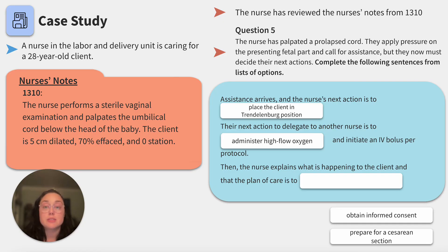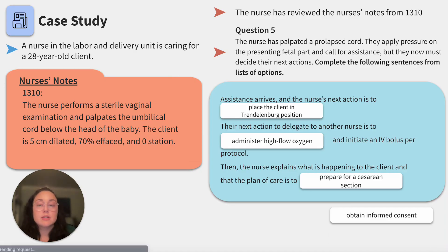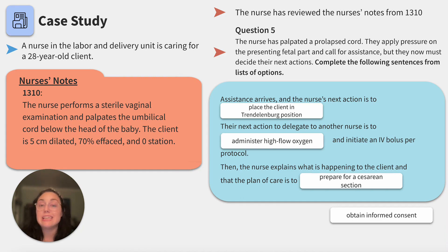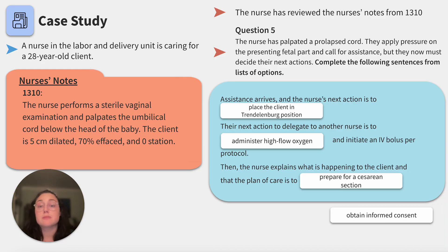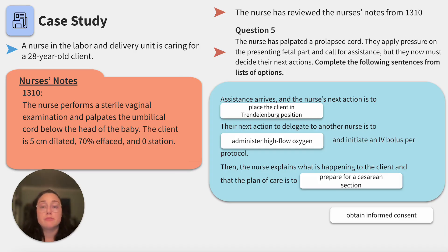Then the nurse explains what is happening to the client and that the plan of care is to prepare for a cesarean section. It is very important to inform our clients of interventions, even in emergencies. The correct choice is to prepare the client for a cesarean section due to the prolapsed cord and cervical dilation. We didn't choose 'obtain informed consent' because that would be done by the provider performing the cesarean section, witnessed by the primary nurse.